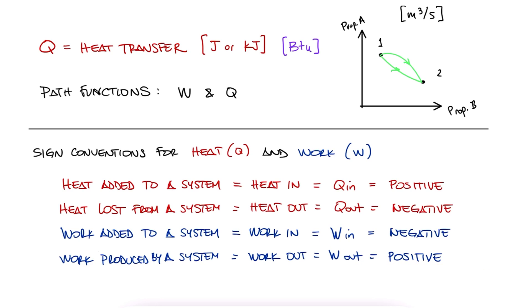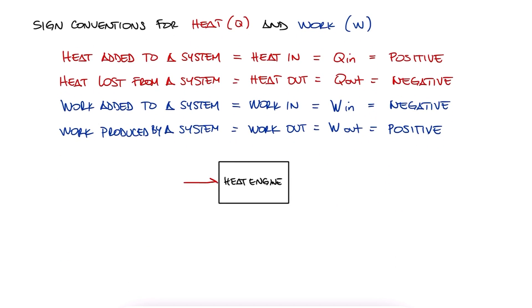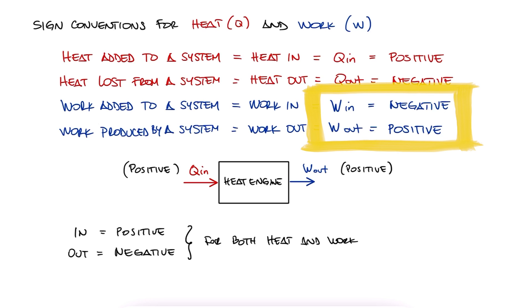The reason for this convention is mostly historical. One of the first applications of thermodynamics was the heat engine, adding heat to a system to get work out of the system, so those two were assumed to be positive. There really isn't a real reason not to assume in as positive for both and out as negative for both, and it would make understanding and solving for energy values a lot easier, believe me. But unfortunately, work coming in is negative, and work coming out is positive. And that's how you'll find it everywhere in the world of thermodynamics, heat transfer, and fluid mechanics. So my advice is just to get used to it as quickly as you can.